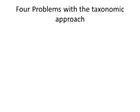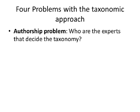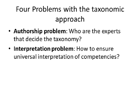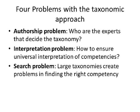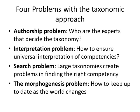Currently, we have a taxonomic approach to competency. There's been enormous effort in creating taxonomies of competencies, but there are four problems associated with this. First, there's an authorship problem — who are the experts that decide the taxonomy? Then there's an interpretation problem — how do we ensure universal interpretation of competencies? The author might decide it means one thing and someone else might decide it means something else. Then there's a search problem: large taxonomies create problems in finding the right competency. And then there's the morphogenesis problem — the world keeps changing. How do you keep up to date? Do you have bureaucratic committees that determine competency?